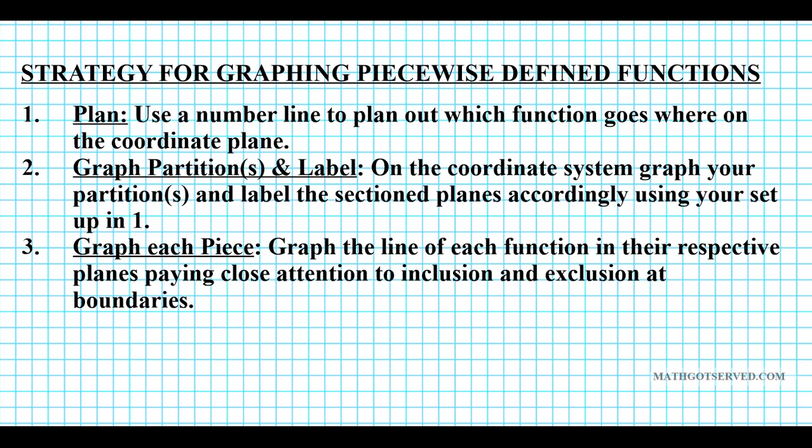Step number one, we're going to plan. This is a very intricate process, so it's good to have a plan so you don't get confused while constructing the piecewise defined functions. We'll basically draw out a number line and plan out which function goes where on the coordinate plane. Step two, we're going to graph our partition and label our sectioned-out planes accordingly using the setup from step one. And then lastly, we're going to graph each function in their respective planes, paying close attention to inclusion and exclusion at the boundaries that separate the planes.